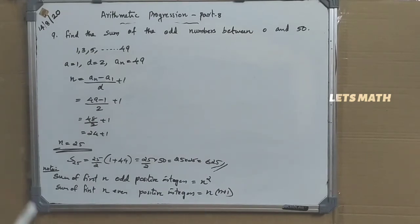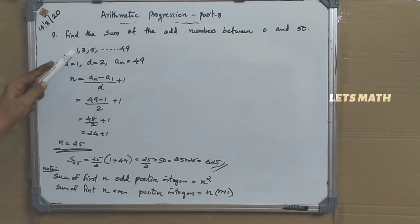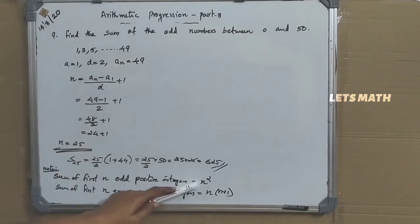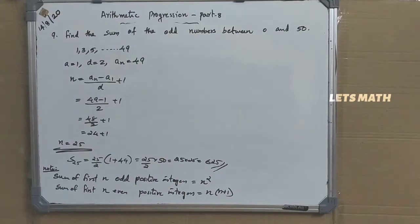You can verify these results by finding SN for the odd and even AP sequences and confirming that the odd sum equals N squared and the even sum equals N into N plus 1.